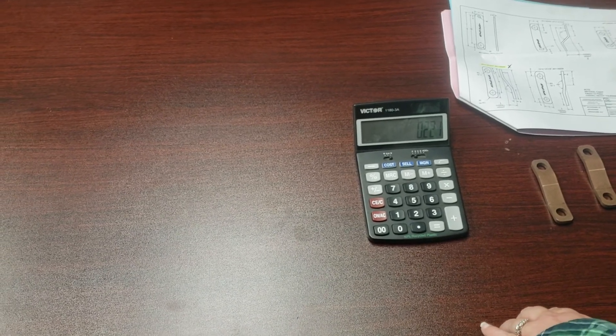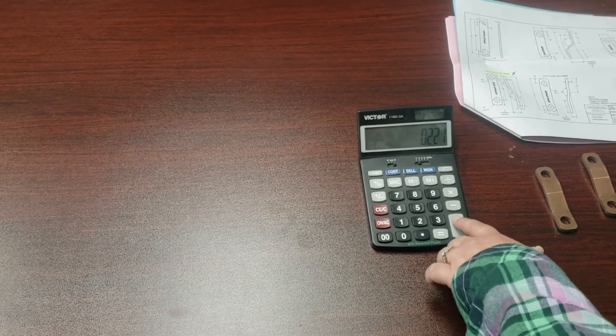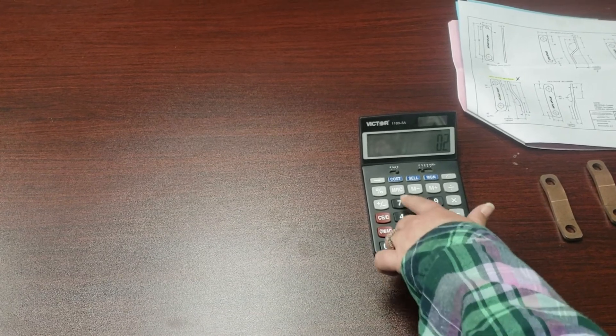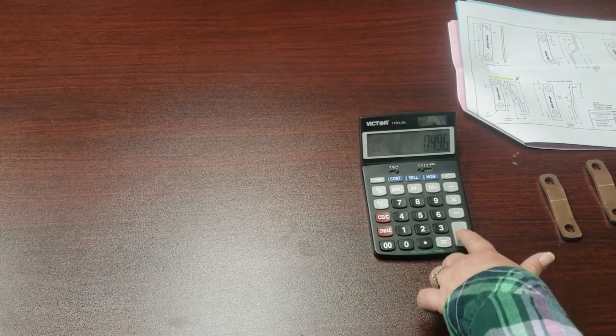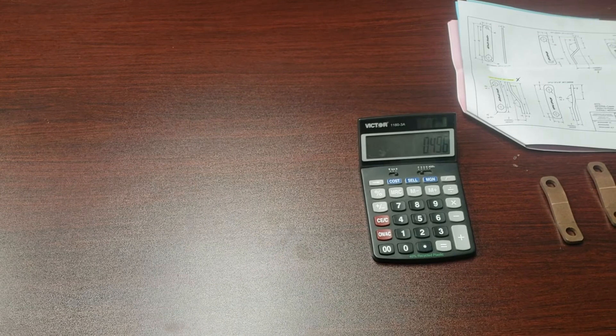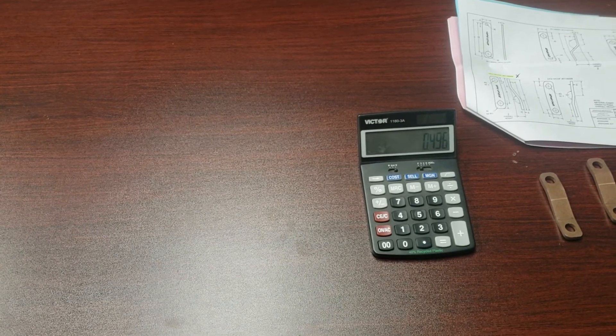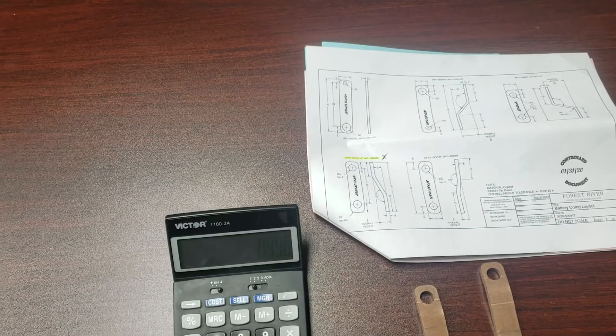Using the calculator, add this reading to half the hole diameter, which is already stored in your calculator. Once you have completed this, you will have your actual measurement from hole to edge.